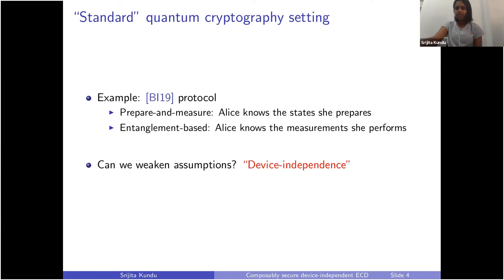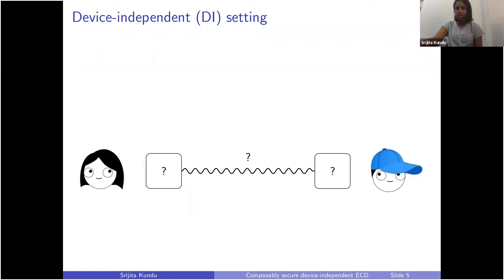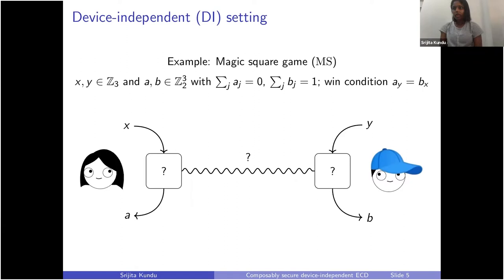For device independence, we want to ask whether we can weaken these assumptions. In the device-independent setting, we assume that the devices that the parties use are some sort of black boxes — states and measurements are both unknown. Their devices are something in which they can enter some inputs: say Alice enters input X and Bob enters input Y, and they get some outputs. An example of such device-independent black boxes would be boxes compatible with the magic square game.